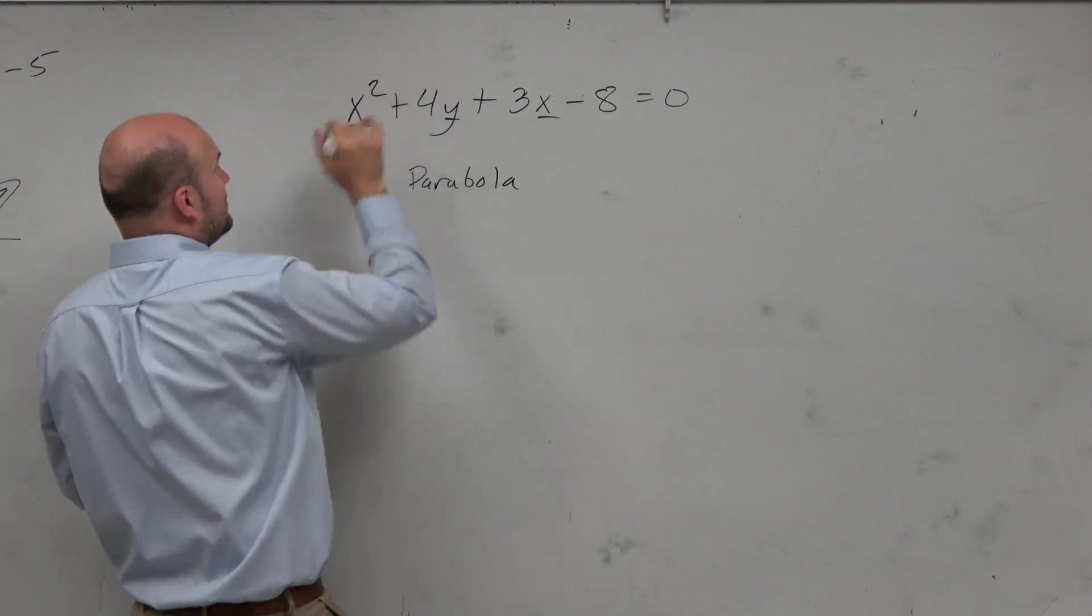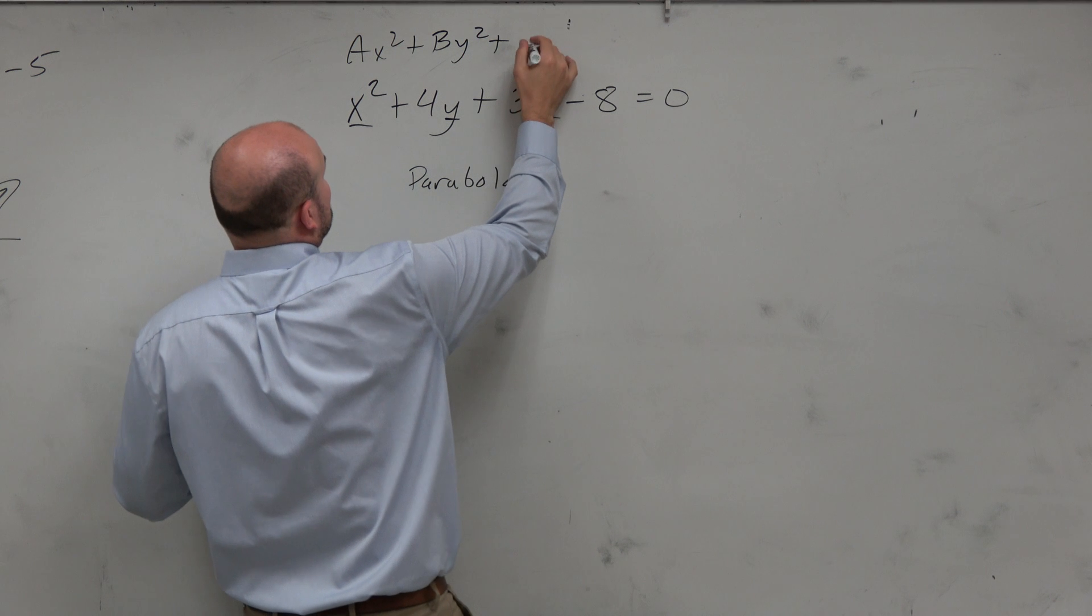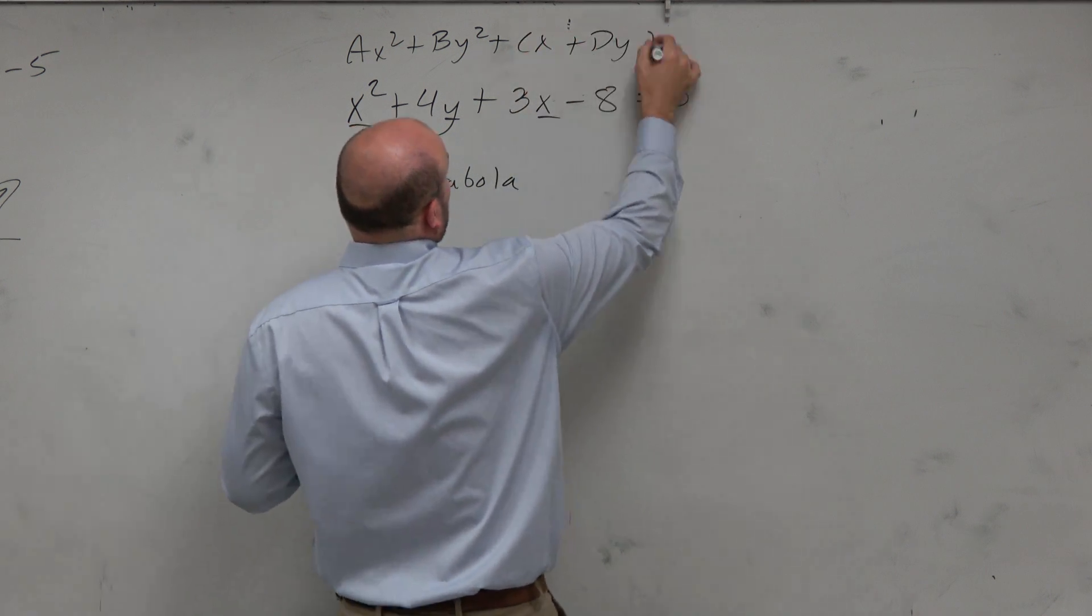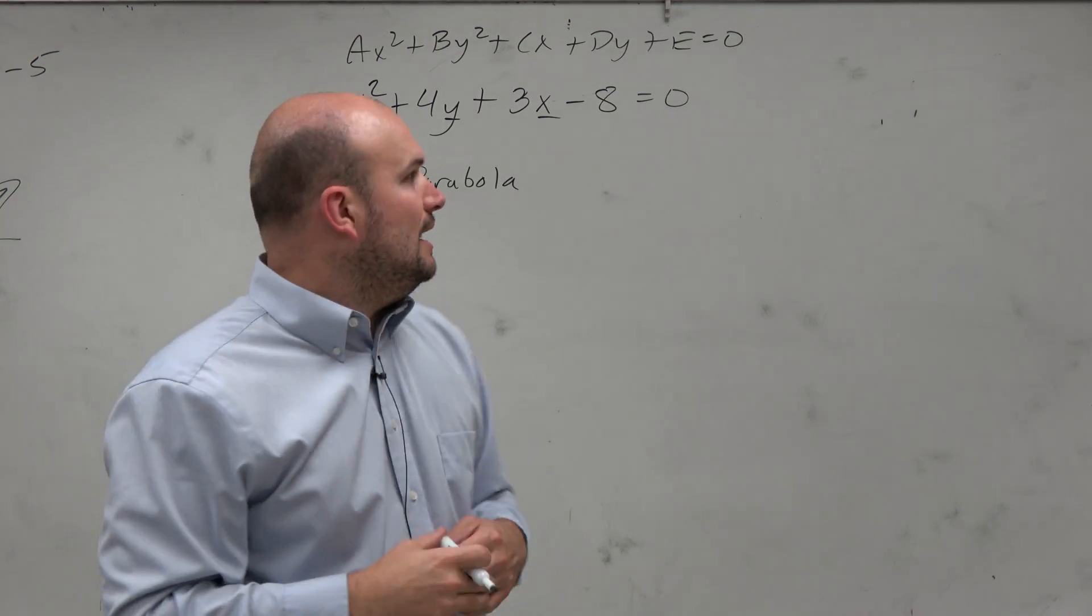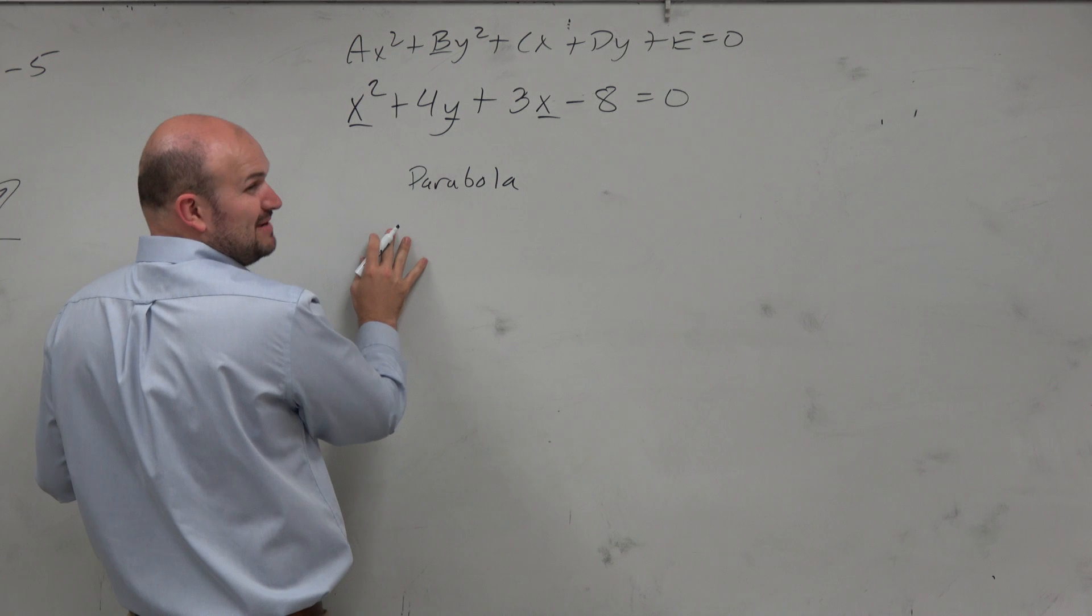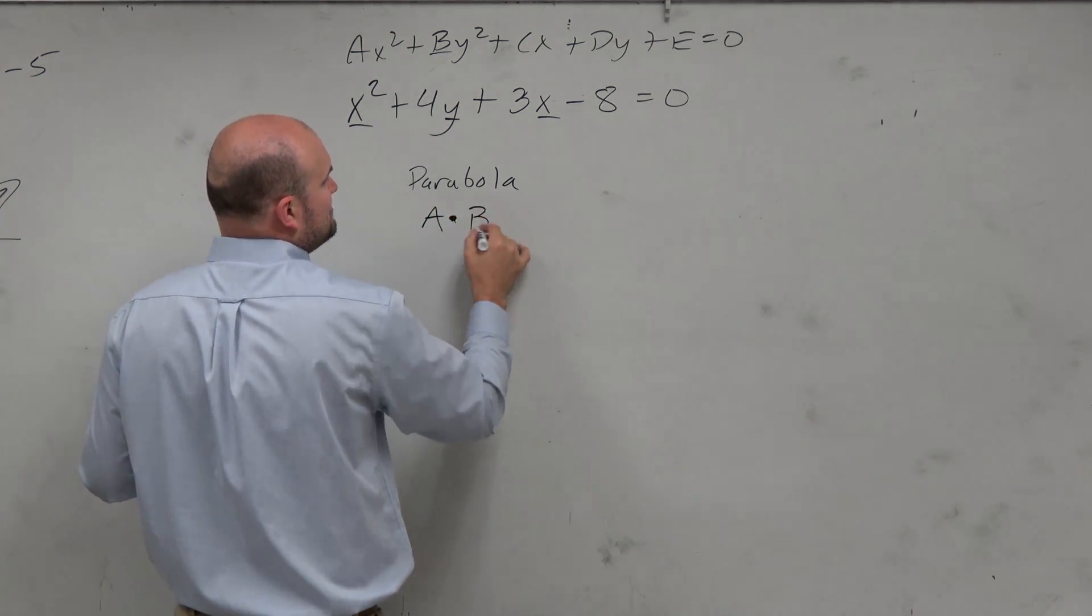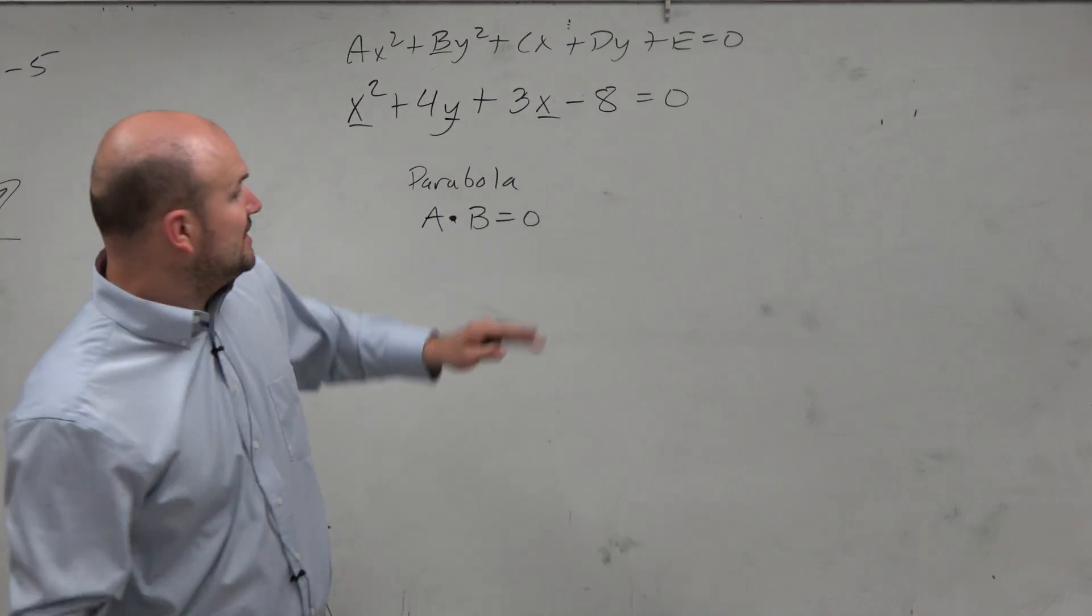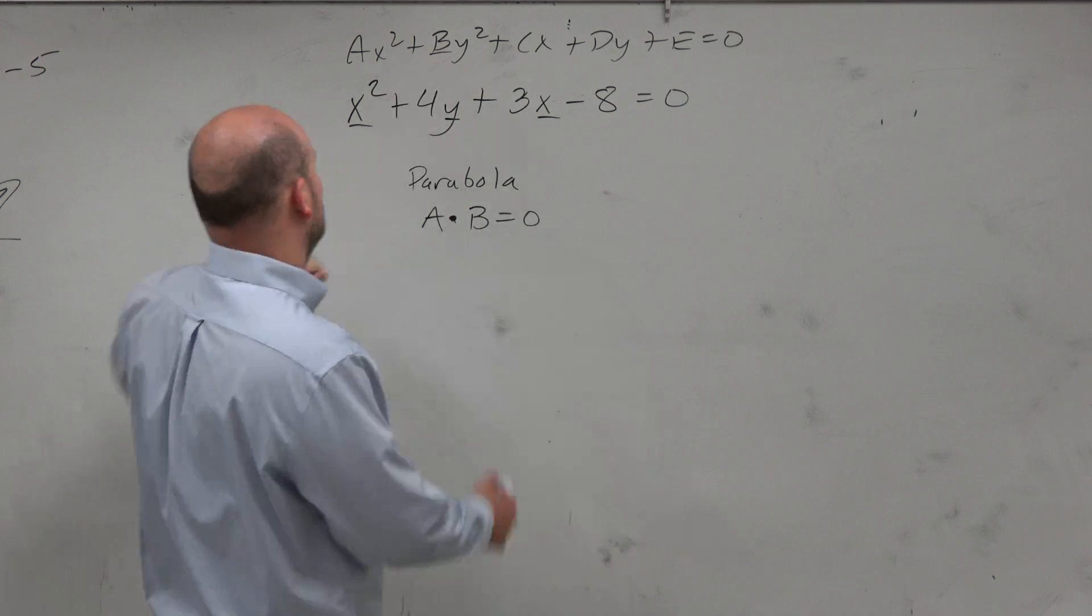Now, in our general form, ax squared plus by squared plus cx plus dy plus e equals 0, which is our general form, there still is a y squared, but that y squared means b has to be 0. Therefore if I was going to justify it, I would say a times b is equal to 0. That's going to be true for any parabola because even though there's not a y squared, there really is a y squared, it just has 0 as its coefficient.